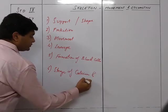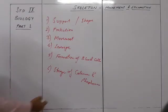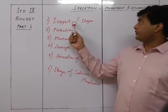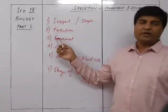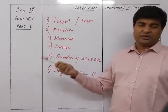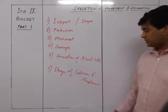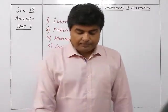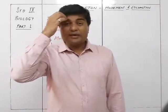So these are the six functions of the skeleton: first, support and shape; second, protection of vital organs; third, movement; fourth, leverage for easy movement; fifth, formation of blood cells; and sixth, storage of calcium and phosphorus. Now let's see what the skeleton is composed of.